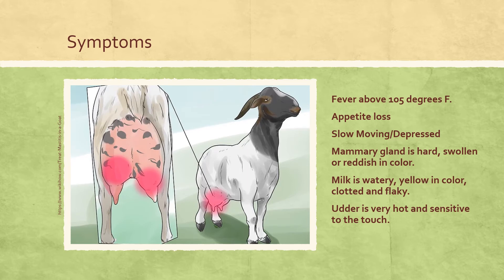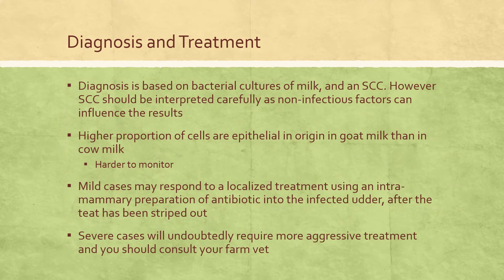Acute mastitis is usually marked by hard, swollen, red mammary glands as well as milk secretions that are watery and yellow, due to the presence of white blood cells in the milk. Chronic mastitis is usually marked by hard lumps on the udder, which can be accompanied by an inability to produce milk and a hot feeling to the touch.